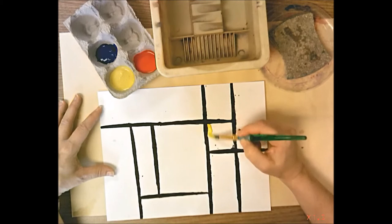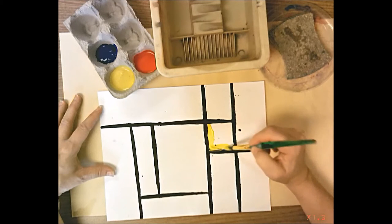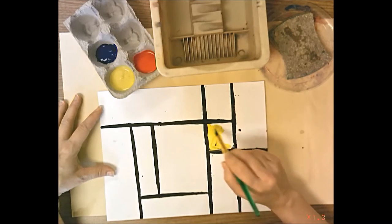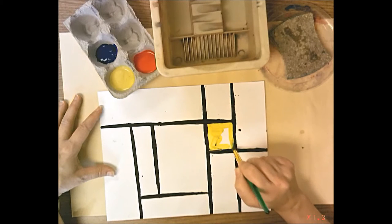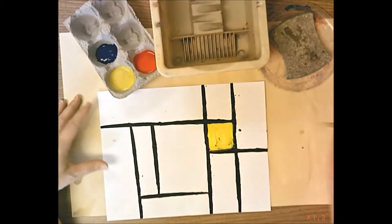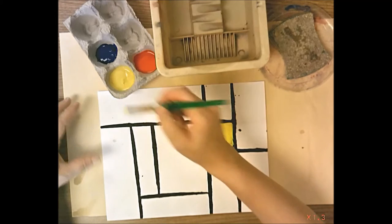Pick a box, any box that you want to paint. Paint it in nice and solid and try not to leave any white paper poking through. I'm going to paint a second box with yellow, but you do not have to.